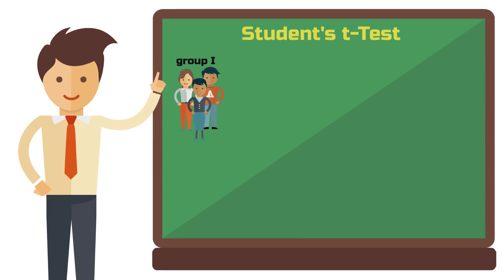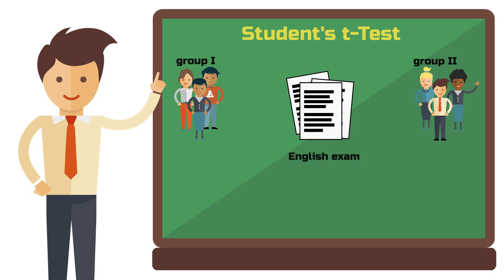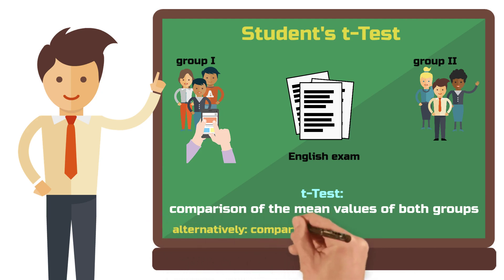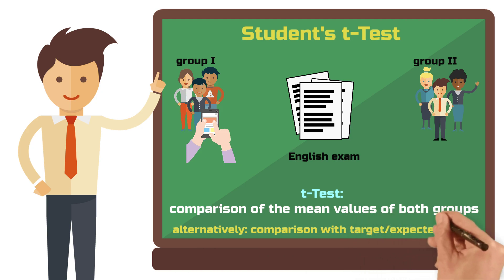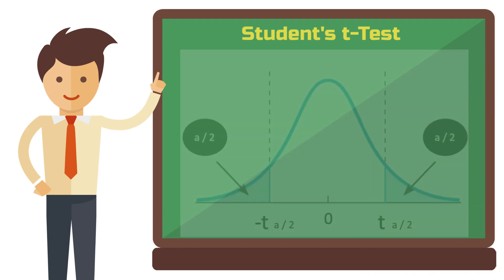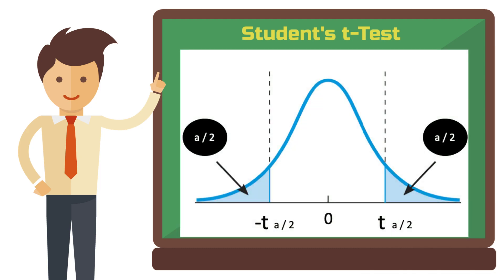Let's say we conduct an experiment with two groups of students. Both groups take the same English exam. However, one group studied using a flashcard app, while the other group did not. We might hypothesize that the group using the app achieve better results. In a t-test, we would compare the mean test scores of both groups. It is also possible to compare the mean of a variable with a specific target or expected value if we don't have another second group.